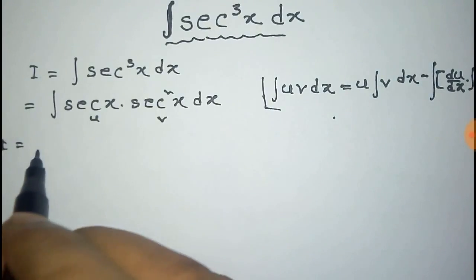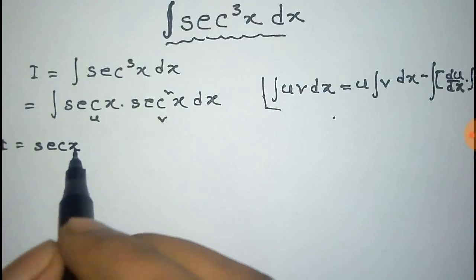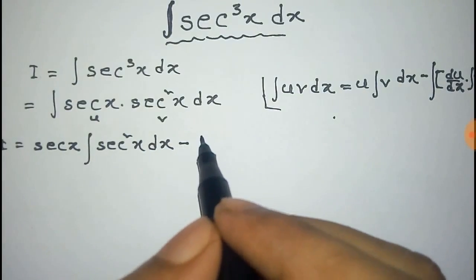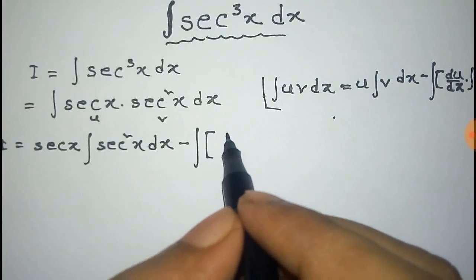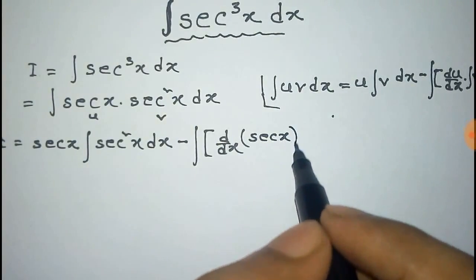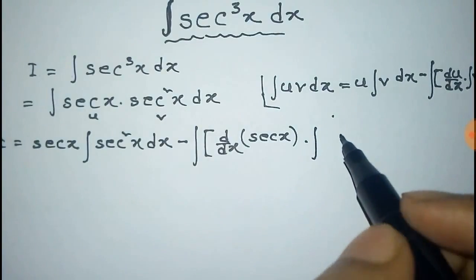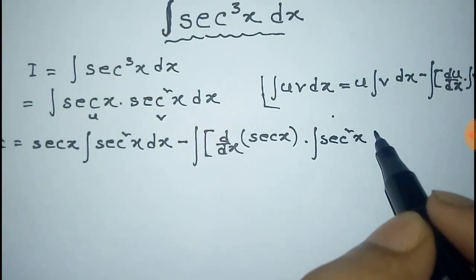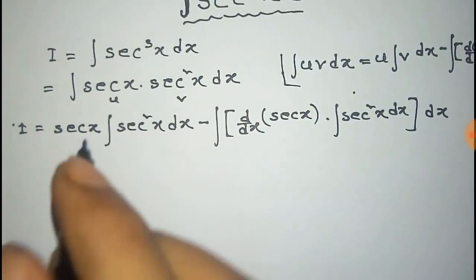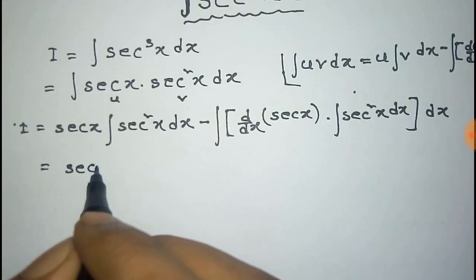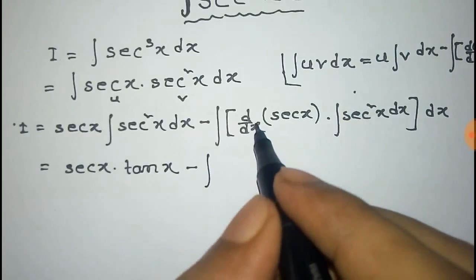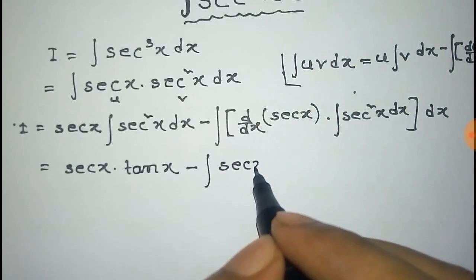Applying this formula: i is equal to u into integration of v, that is sec x times integration of sec square x dx, minus integration of derivative of u — that is derivative of sec x — into integration of v, that is integration of sec square x dx. This equals sec x times tan x, minus the total integration of derivative of sec x, which is sec x times tan x.